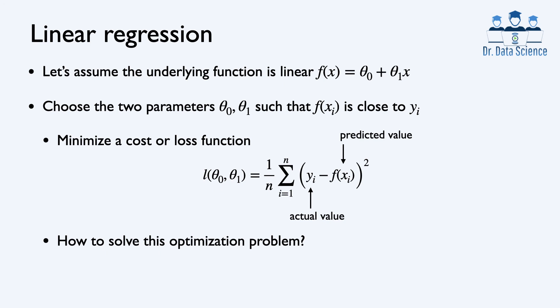Remember that y_1 through y_n are given in our training data set. The next step is to define a cost or loss function that measures how close the actual values and predicted values are. The simple way is to subtract actual values from predicted values, square this difference so all values are positive, and then take the average of these error values. We now have an optimization problem: find theta_0 and theta_1 that minimize this cost function.